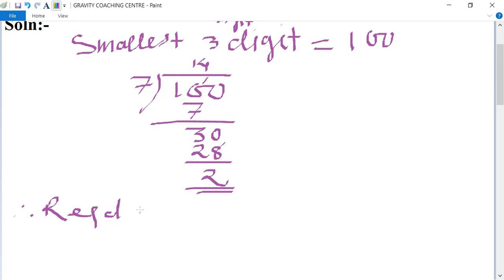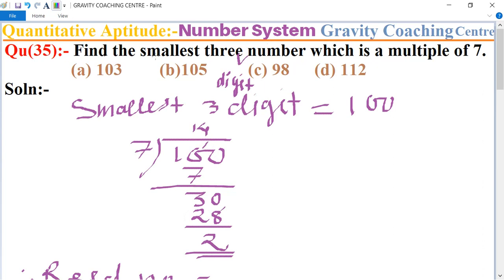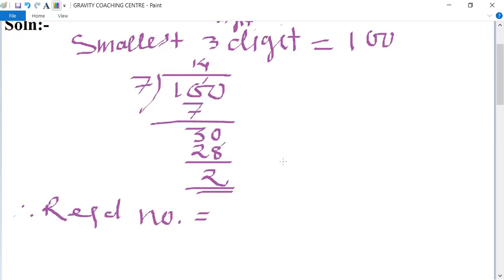Therefore, to find the smallest three-digit number that's a multiple of 7, the required number equals 100 plus (7 minus 2), which equals 100 plus 5, equals 105.